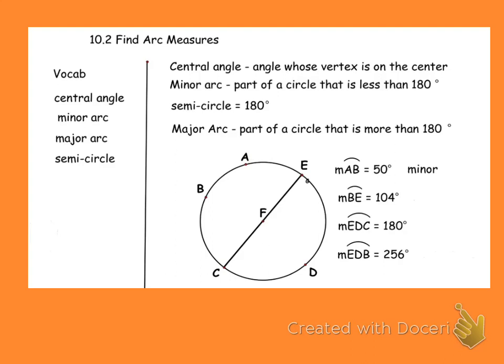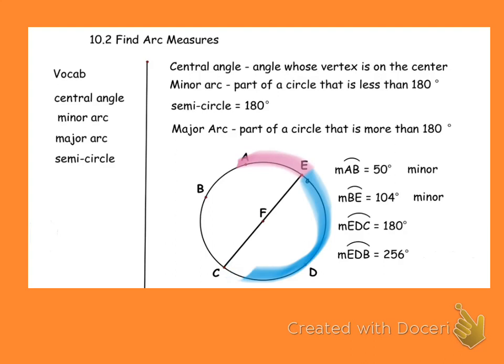Arc BE is this arc here, and BE is given to us as 104 degrees, so it's a minor arc as well. Some of you analytical heads might be thinking — what if I went BE the other way? The thing you need to understand is that minor arcs are labeled with only two letters, and because it's labeled with two letters, you know it's going to go the shorter route. That's why you know not to go that long route.